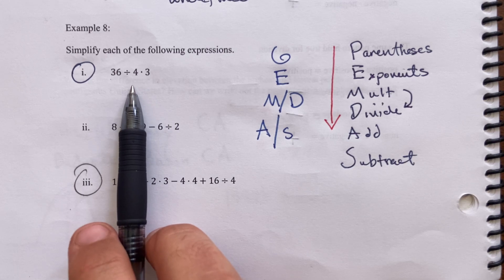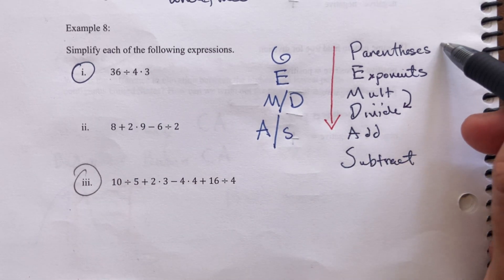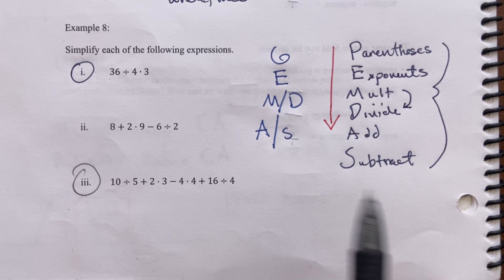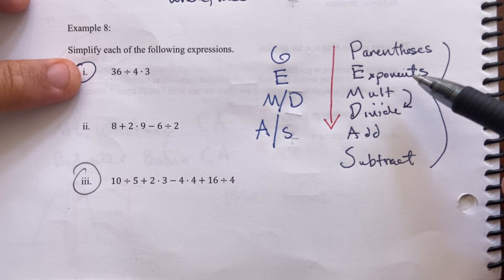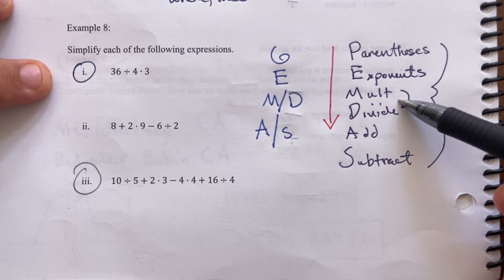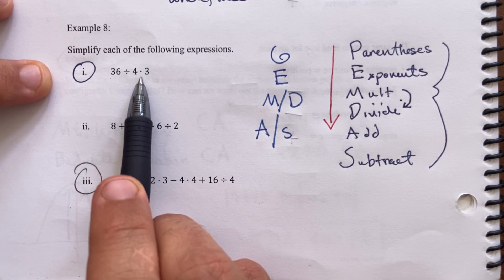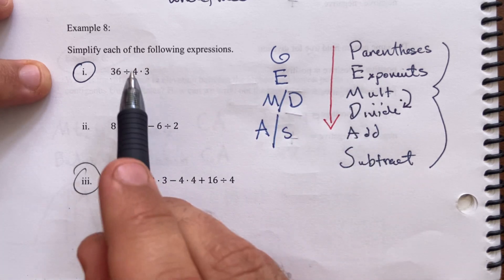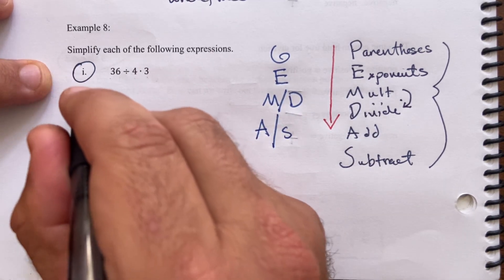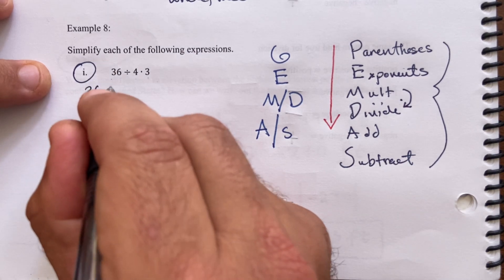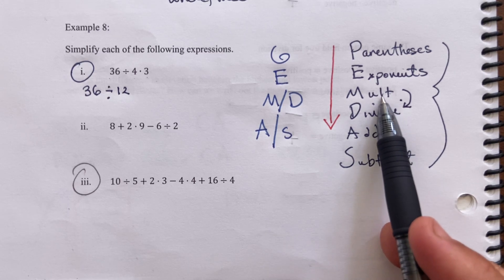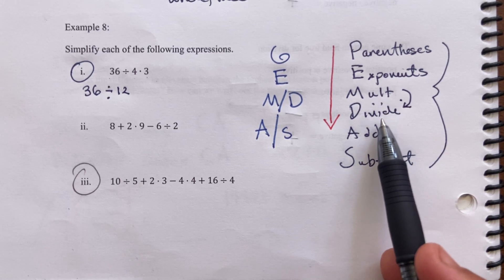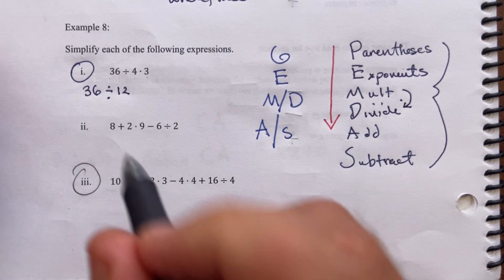Here's an example showing why this matters: 36 ÷ 4 × 3. Using the old PEMDAS approach, if you multiply first — 4 times 3 is 12, then 36 ÷ 12 gives 3. But typing it into the calculator gives 27. What went wrong? You should look for grouping symbols first — there are none. Exponents — none. Now at multiplication or division, the division appears first, left to right. So take 36 ÷ 4 = 9, then 9 × 3 = 27.